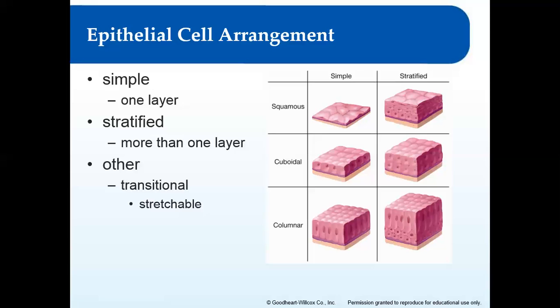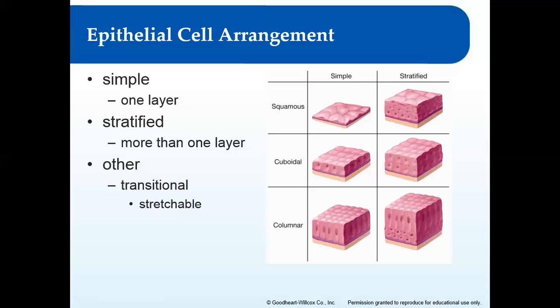With transitional tissue, if I'm asking you on a test, I'll tell you where it would be found because it's hard to identify by appearance alone. If the bladder is really full, the tissue looks squamous under pressure; if the bladder is not full, it may look more columnar. Because it changes shape depending on how full it is, it's called transitional. Your bladder can hold a lot of fluid because of that transitional tissue.